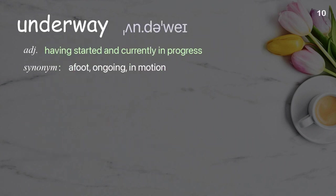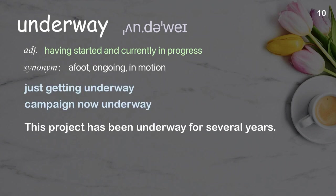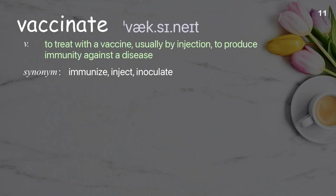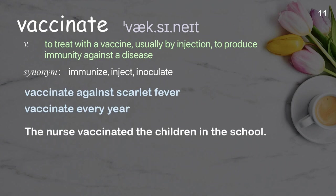Underway: having started and currently in progress. Examples: just getting underway, campaign now underway. This project has been underway for several years. Vaccinate: to treat with a vaccine, usually by injection, to produce immunity against a disease. Examples: vaccinate against scarlet fever, vaccinate every year. The nurse vaccinated the children in the school.